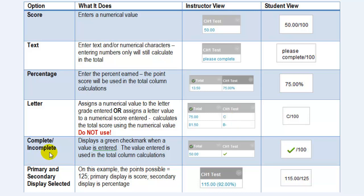If you select the complete incomplete option, the column displays a green check mark no matter what value you enter. However, the value that you enter is added into the total column. The student sees the check mark and the points possible.